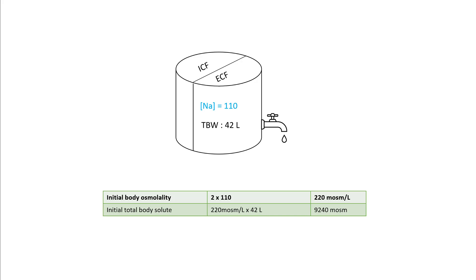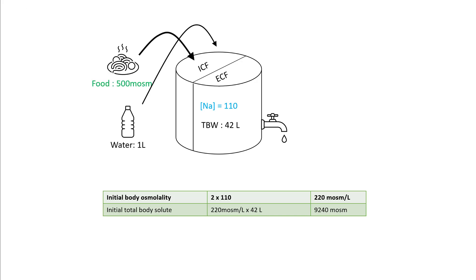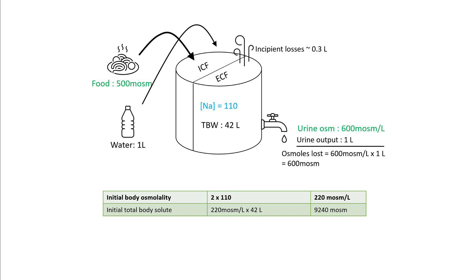This is a depiction of the human body with a sodium of 110, total body water of 42 liters, with ICF and ECF compartments. Initial body osmolality is 220 and initial total body solute is 9,240. The sodium level in the system will depend upon the amount of food and the amount of water you drink, and also depend upon how much you are losing in the urine and how much your insensible losses are.